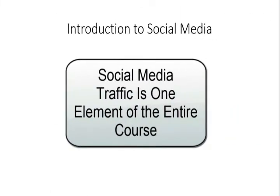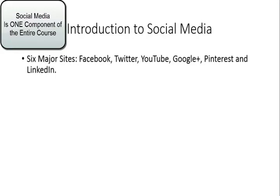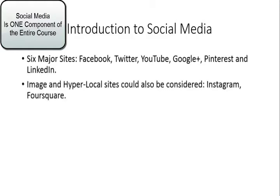Introduction to social media — we're about to do a series on social media traffic videos. There are some common elements in what you're going to see that you'll want to consider for all the social networks. We're going to be covering six of the major sites: Facebook, Twitter, YouTube, Google Plus, Pinterest, and LinkedIn. We could cover image sites like Instagram and Foursquare, but all these elements are pretty much going to be the same. You want to make sure you are participating on those major six sites.